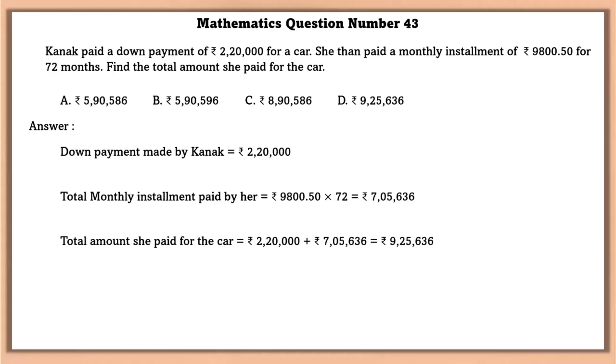Mathematics question number 43. Kanak paid a down payment of 2 lakhs 20,000 for a car. She then paid a monthly installment of 9,800.5 rupees for 72 months. Find the total amount she paid for the car. Down payment made by Kanak is equal to 2 lakhs 20,000. Total monthly installment paid by her is equal to 9,800.5 rupees into 72, because it's 72 months. So therefore 7 lakhs 5,636 is the monthly installment paid by her. Total amount she paid for the car is equal to 2 lakhs 20,000 plus 7 lakhs 5,636, is equal to 9,25,636.